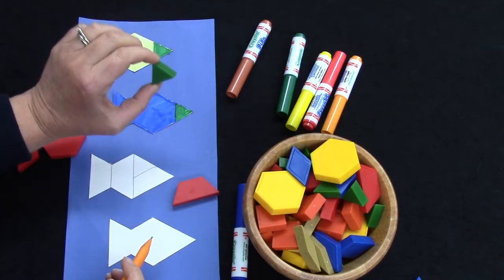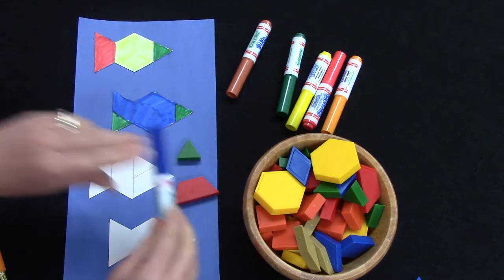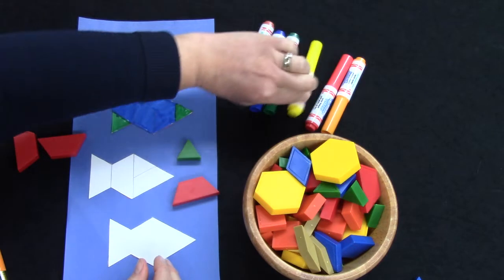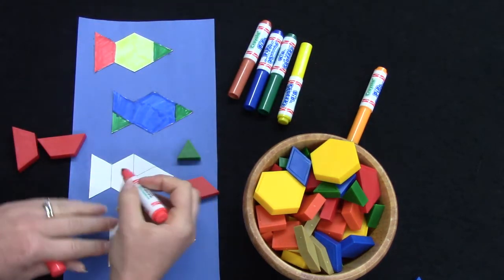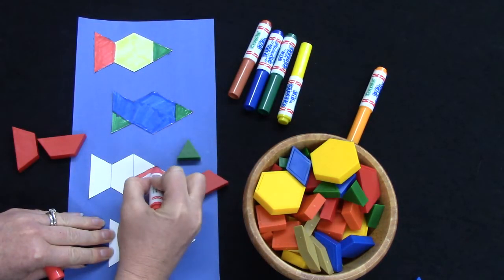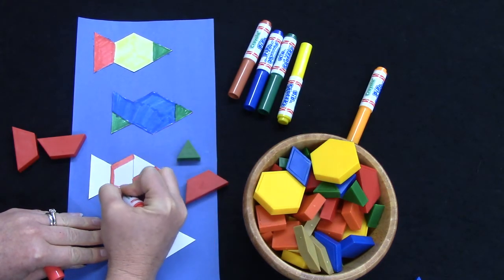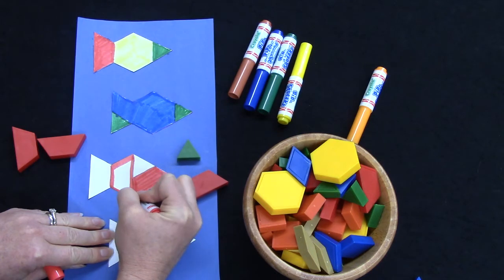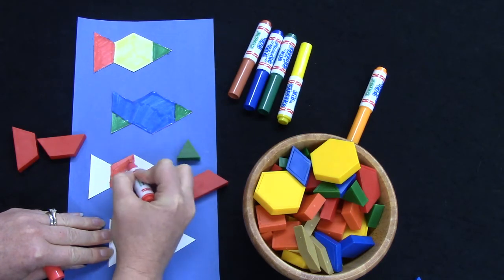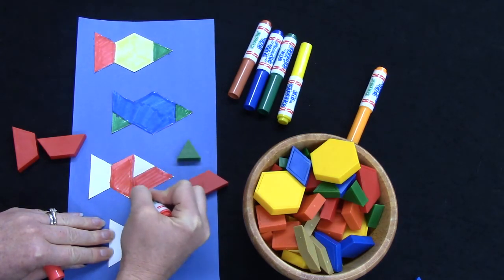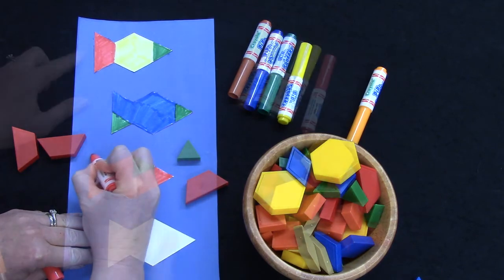I am going to color my trapezoids red. I've been able to pattern my fish in three different ways. There's so many different ways and I want you to choose your own ways. I have one more fish to design and color.